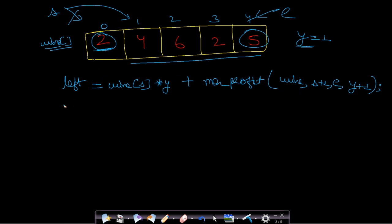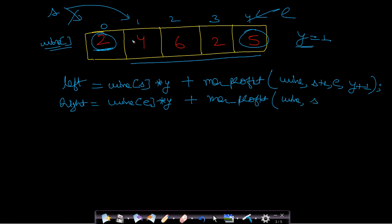This represents the first option. The second option stored in the 'right' variable is wine[end] multiplied by the number of years elapsed. Max_profit is called recursively with the same starting point but end decremented by one, and year incremented by one — since in a single year you can sell only one bottle of wine. We then return the maximum of left and right.